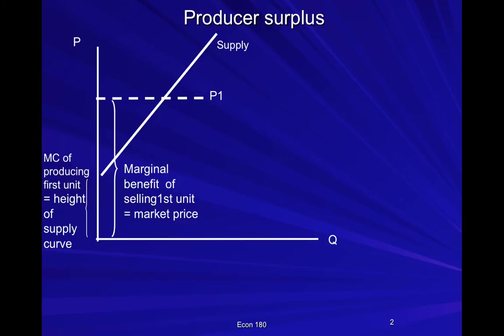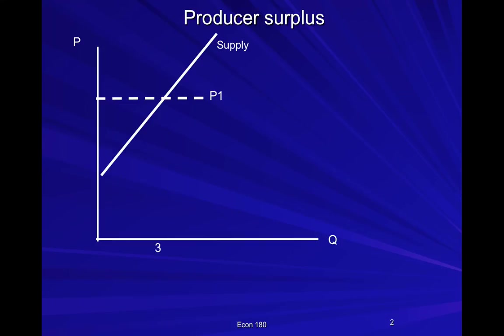The difference is the producer surplus for the first unit. Since the benefit exceeds the cost, the firm should produce that unit. They will continue to the point where marginal benefit equals marginal cost — where the price equals the marginal cost of producing one more unit. That is where the price meets the supply curve.